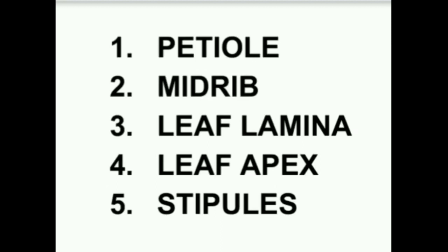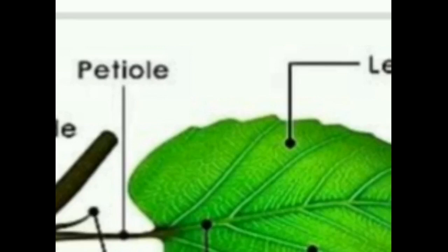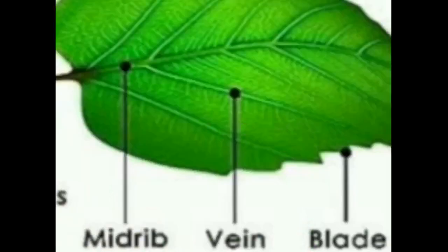Five: stipule. What is petiole? Petiole is a stalk — with the help of petiole the leaves are attached to the stem. What is midrib? We can see a thick vein at the center of the leaves; that is called the midrib.